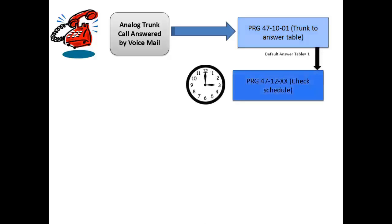After the system determines which answer table to use, the next place to look is program 4712. In 4712, per answer table defined in 4710, you will define the voicemail schedules. This program is where you assign days of the week and times to a specific answering mailbox. For example, Monday through Friday from 8 to 5, you would assign routing mailbox 1, and routing mailbox 1 will be used for the daytime greeting.